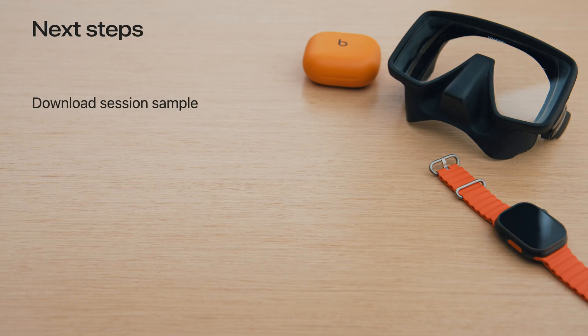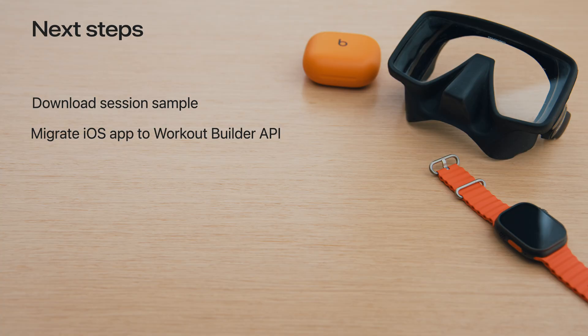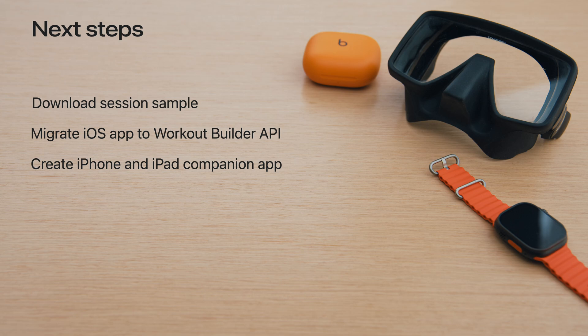Here are some next steps. Be sure to download the demo app attached to this session — it has all the code shared today wrapped into a fully functional example you can use to get started. If you already have an app on iPhone or iPad, make sure to upgrade to the Workout Builder APIs covered today. If you already have an app for Apple Watch, multi-platform support for the same API means your app has a whole new market for those without an Apple Watch. Many of the features implemented are a direct result of your feedback, so keep it coming. We want to support the features you need to keep building those amazing apps to keep the world healthy. Thank you for watching.